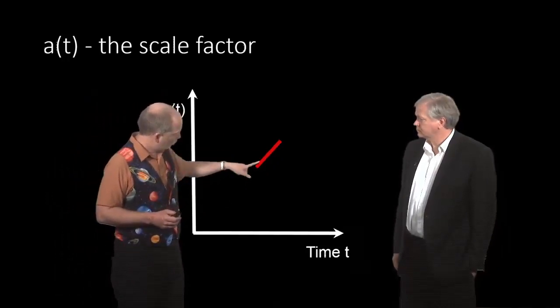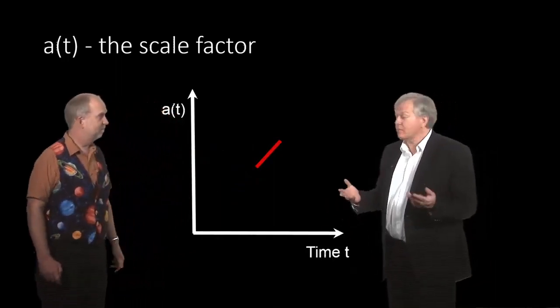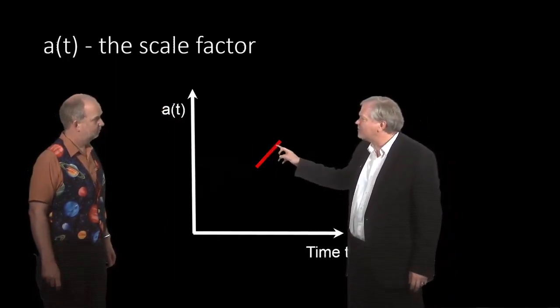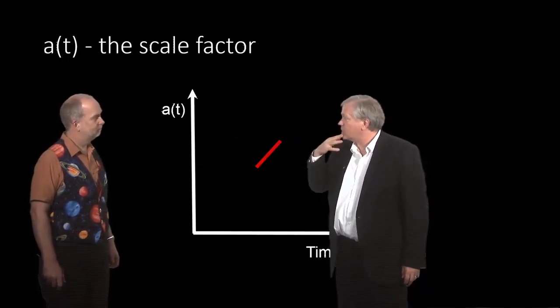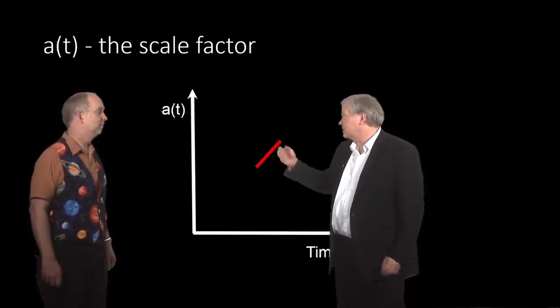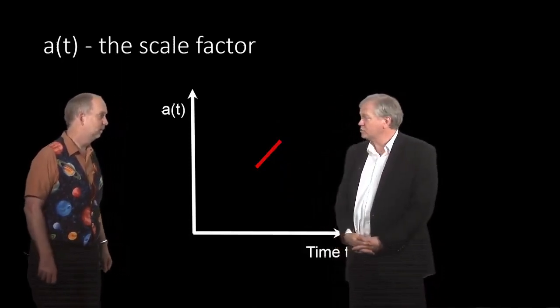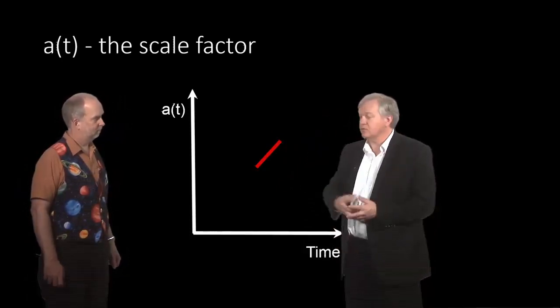In principle we can work out the shape of this curve. This is what I did for my PhD thesis, Paul. I was able to look back about five percent, so where the scale factor changed by about five percent, a small amount. I could measure essentially over what length that change of five percent referred to, and that allowed us to measure the Hubble constant, how fast the universe is expanding now.